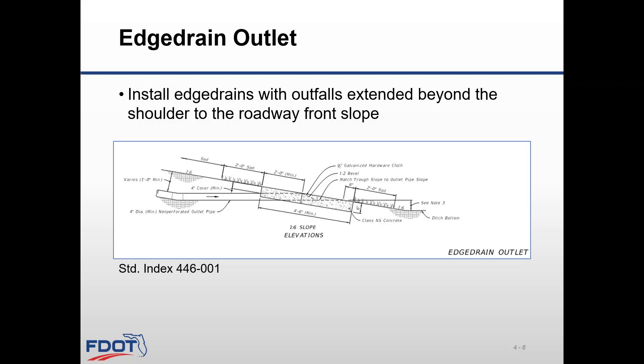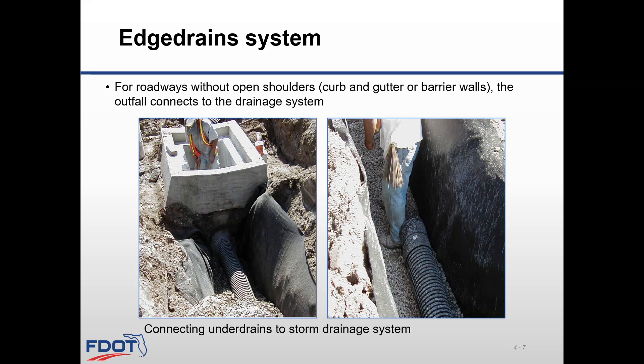This slide shows a detail with the pipe system for a concrete pavement system with shoulder and how to install the edge drains beyond the shoulder to the roadway front slope. For roadways without open shoulders, curbing, gutter, or barrier walls, the outfall connects to the drainage system. This picture shows the connection of the under drains to the stormwater system.